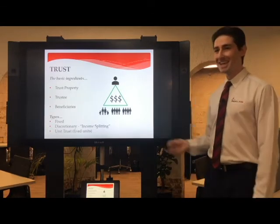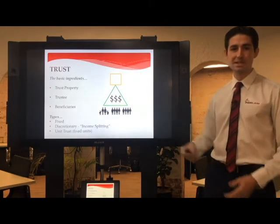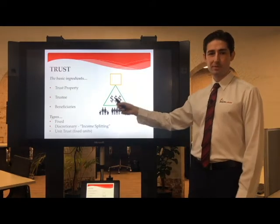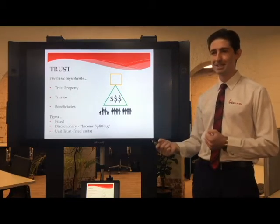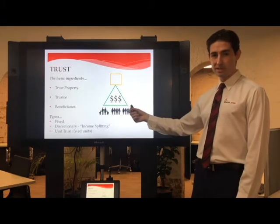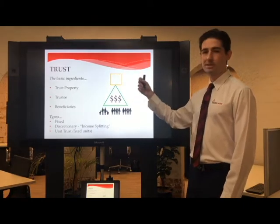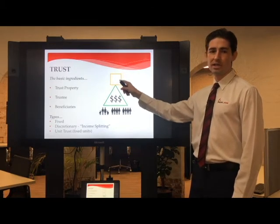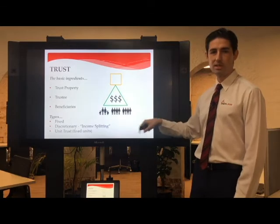You can also have a company as the trustee of a trust — which is confusing but important. In this structure, the trust is the economic entity: it holds the money, receives income, and pays expenses. The company at the top acts purely as trustee — it has no assets and receives no income — it simply makes decisions as trustee about how the trust income gets distributed.